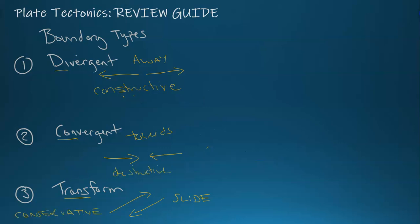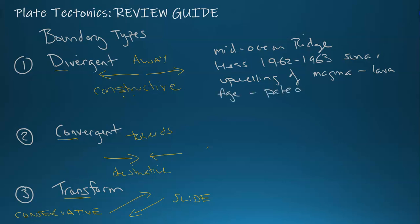The features of the divergent: you have a mid-ocean ridge found by Hess in 1962 to 1963 using sonar. You have the upwelling of magma through convection currents, through the ridge, causing lava to flow, causing the basalt to be formed. The age and the paleomagnetism were ways to prove the ocean floor is moving. This was seafloor spreading, the theory that Wegener could not prove.